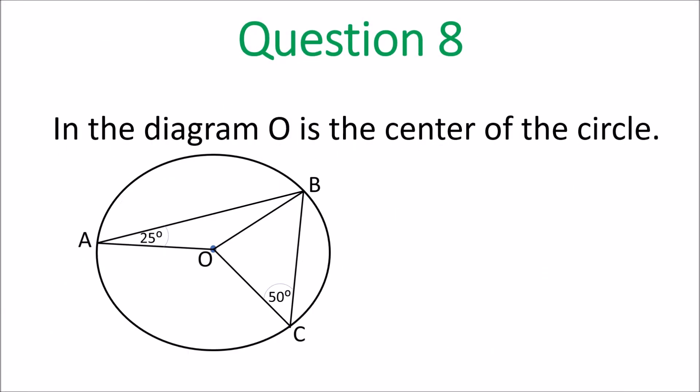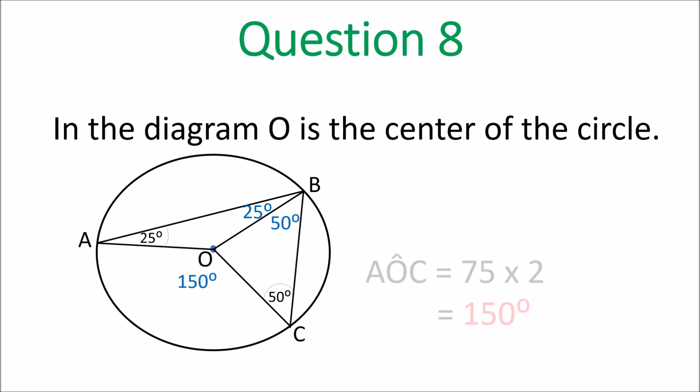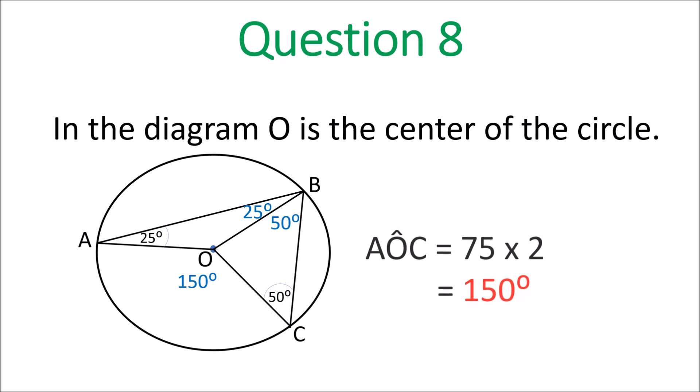Question 8: O is the center of the circle and we want to find angle AOC. The triangles are isosceles — dealing with the radii — so that gives you 25 and the other triangle also gives 50. Double those to find angle AOC, because the angle subtended at the circumference is half the angle subtended at the center. So 75 times 2 equals 150 degrees — angle AOC is 150 degrees.